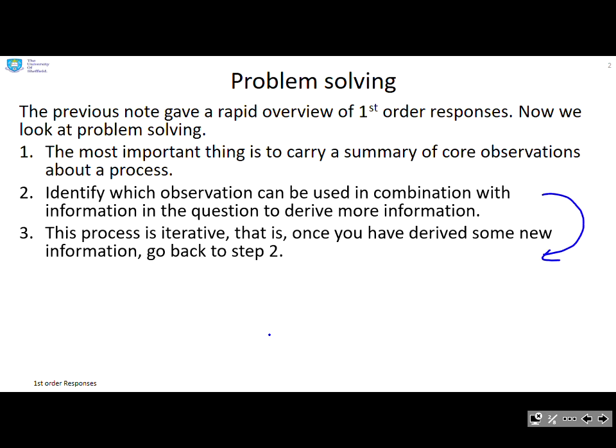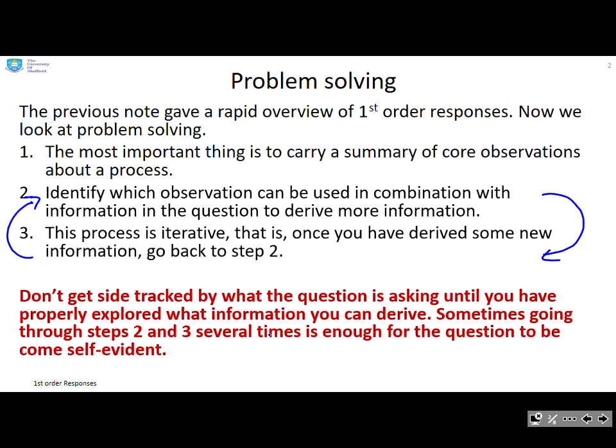You're basically doing a loop. Having got new information, you go back to step two and say with this new information combined with what I already know, can I work out something even further. Don't get sidetracked by what the question is asking. What you've got to do first is basically summarize what you know about the context and combine that with the information you're given and see what information that gives you. Sometimes if you go through steps two and three several times and derive new pieces of information, suddenly how to answer the whole question will become self-evident.